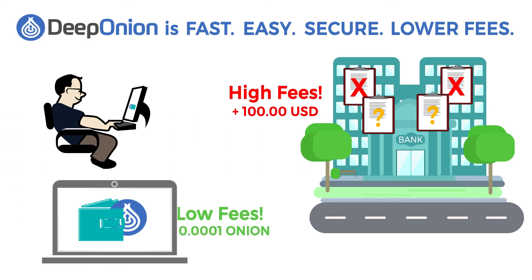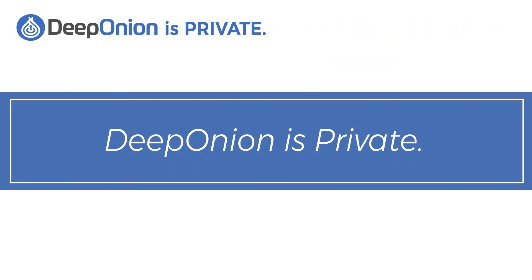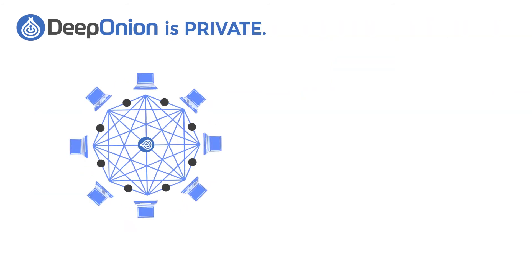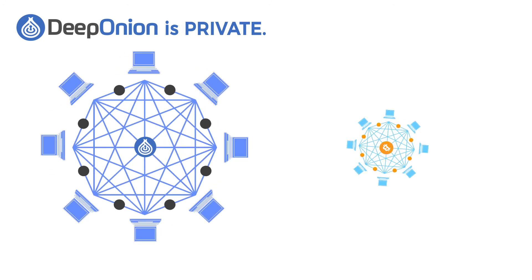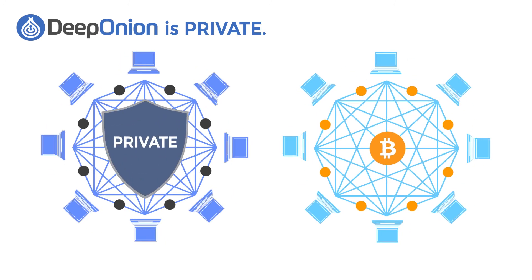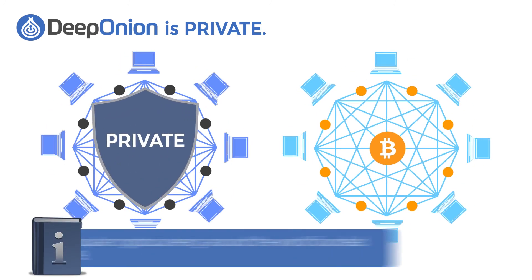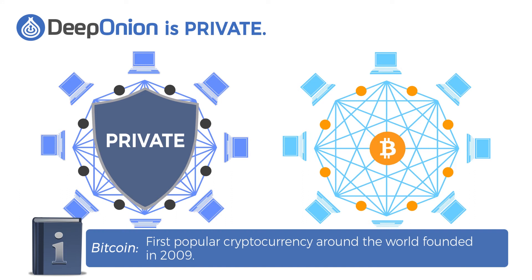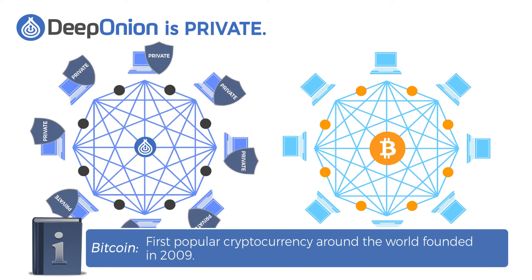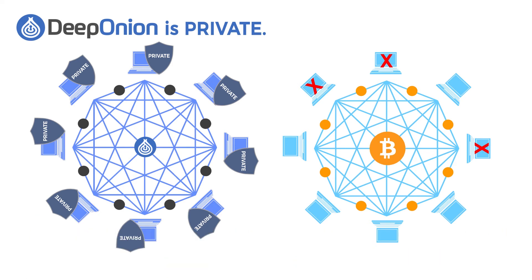Deep Onion has lower fees — it costs much less than banks to send money. Deep Onion is also private. Unlike other cryptocurrencies such as Bitcoin, with Deep Onion you can access different options that allow you to keep your privacy. With Bitcoin, anyone can access your information in a matter of minutes, but with Deep Onion you can send money privately without being tracked by anyone.